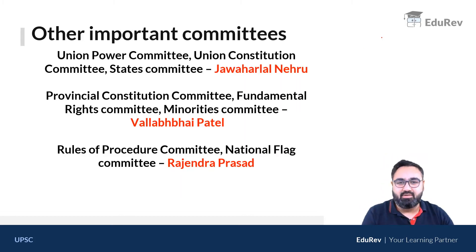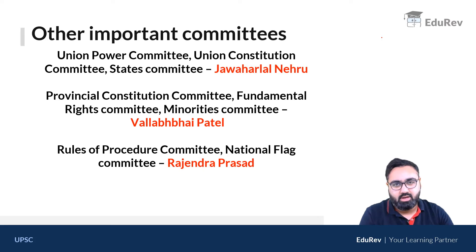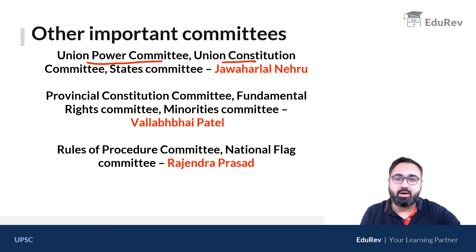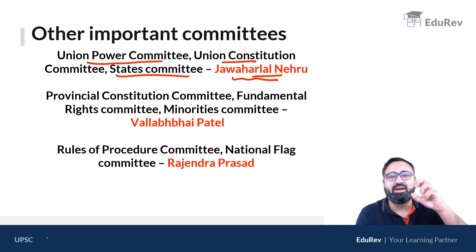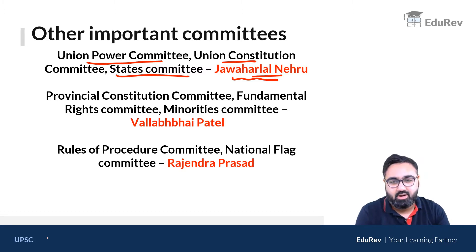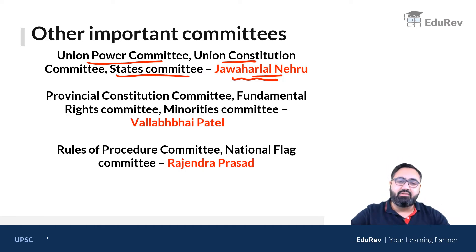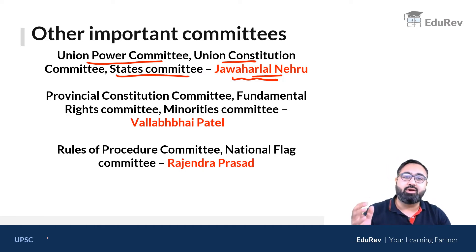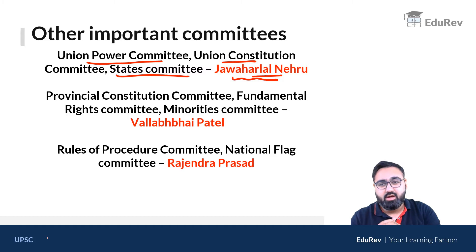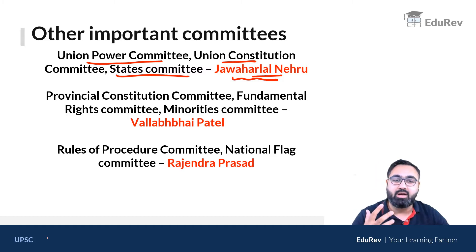There were many other committees made at that time, headed by very prominent people. The union powers committee, the constitution committee, and the states committee were headed by Nehru. All of these committees had specific tasks assigned to them. The states committee with Jawaharlal Nehru, for example, was to negotiate with the states how much power the states would have and how much power the central government would have.